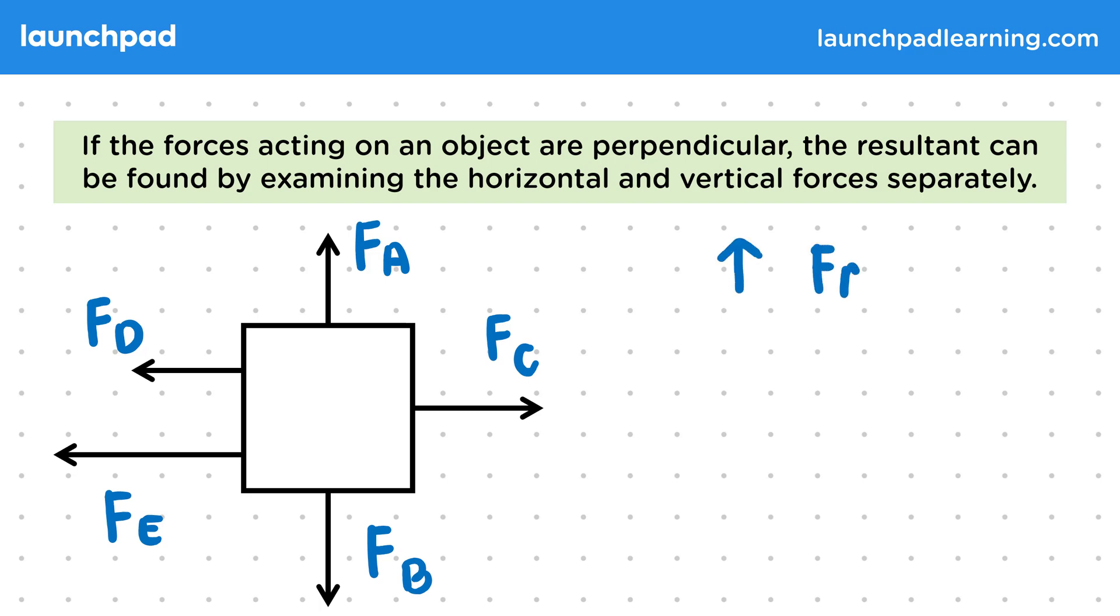So in the vertical direction, we have FA minus FB. In the horizontal direction, we have FD plus FE minus FC.